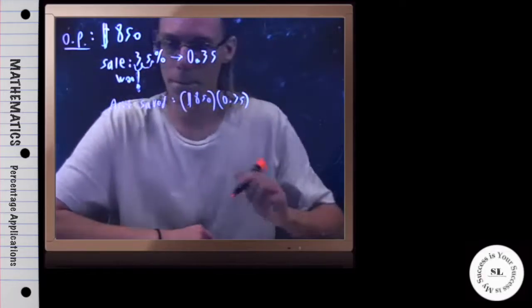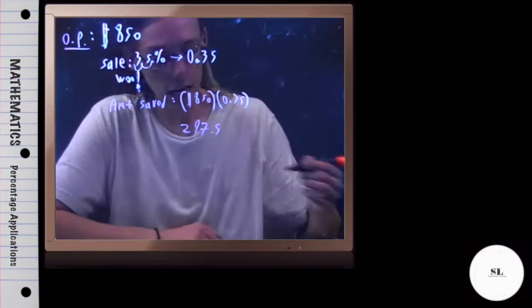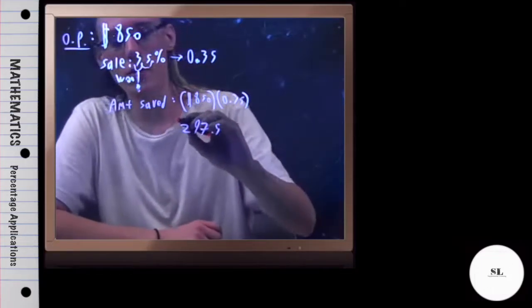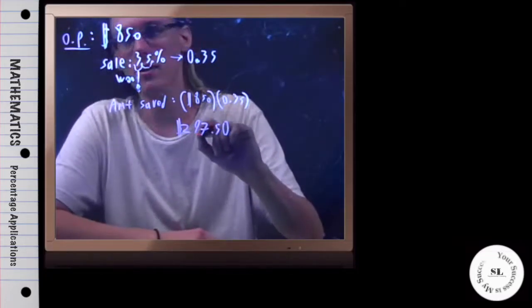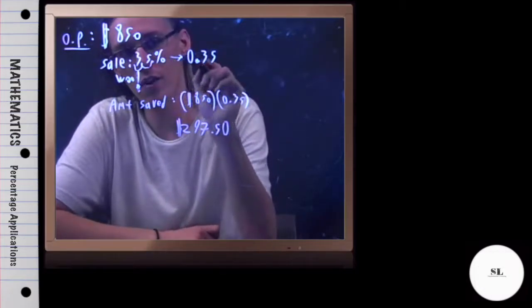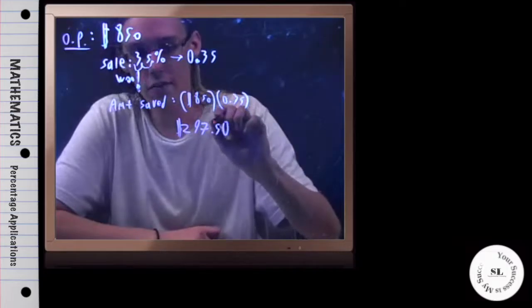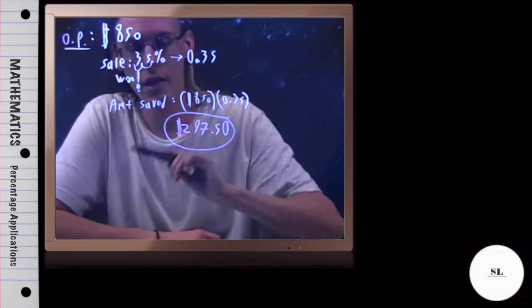That's going to give me $297 and the calculator says .5, but remember we're talking about money here, so .50, $297.50. So, if the original price is $850 and it's on sale for 35%, the amount you're saving, not the amount you're paying, but the amount you're saving is $297.50.